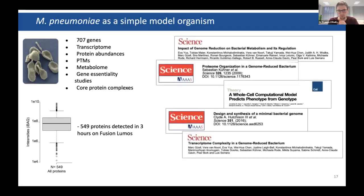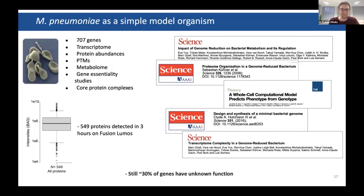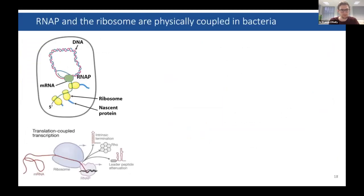People have used this species or its cousins to do full models of cells. Craig Venter is doing the minimal bacterial genome where he makes this even simpler by removing more genes, but amazingly 30% of its genes still have unknown function. We were particularly interested in transcription-translation coupling.